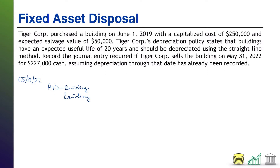If we're simply getting rid of something not receiving any cash in return, we won't have a debit for cash. In the case of this problem where we are selling for cash, we also debit cash. Then it's up to us to figure out whether we broke even — in which case the journal entry is done once we fill in the numbers — or whether we had a gain or loss, in which case we have to add a line for that. So let's start filling things in.